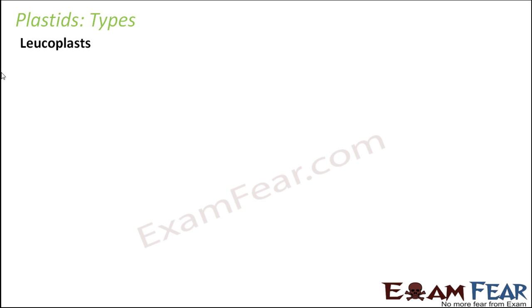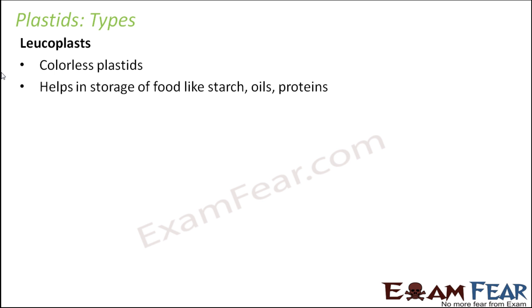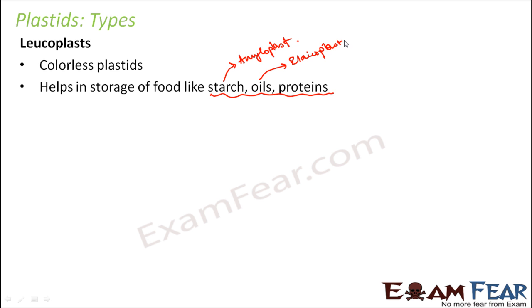Let us start our discussion with leucoplast, the colorless plastids. They do not impart any color, but they help in storage of food like starch, oils, and proteins. There are different names given to each subtype. The colorless plastid which stores starch is called amyloplast. The one which stores oils is called elaioplast, and the one which stores protein is called aleuroplast. So leucoplast has three subtypes — amyloplast, elaioplast, and aleuroplast — storing starch, oils, and proteins respectively.